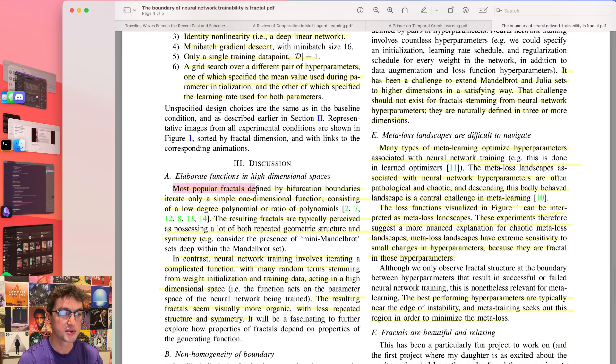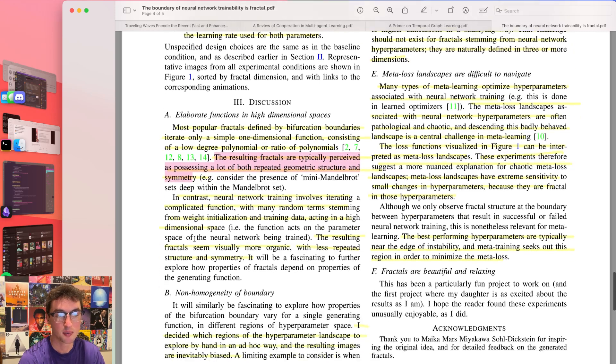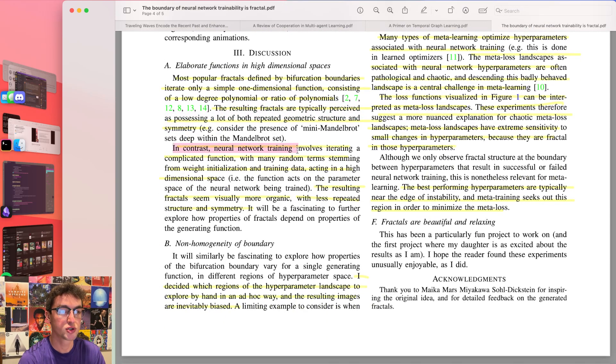So most popular fractals defined by bifurcation boundaries iterate only a simple one-dimensional function consisting of a low degree polynomial or ratio polynomials. If you've ever looked up fractal zoom before, that's those. They all use very simple functions. The resulting fractals are typically perceived as possessing a lot of both repeated geometric structure and symmetry. Mandelbrot an example. In contrast, neural network training involves iterating a complicated function with many random terms stemming from weight initialization and training data acting in a high dimensional space. The resulting fractals seem visually more organic with less repeated structure and symmetry.